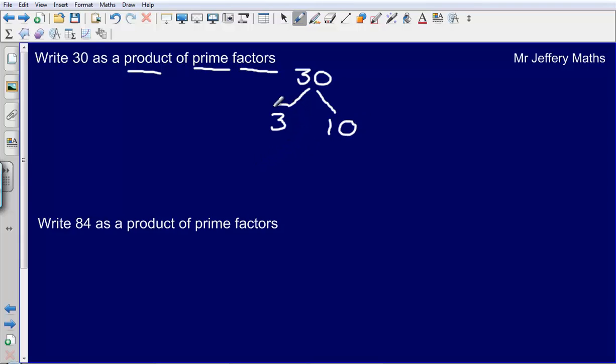Now if I get a prime number, all I'm going to do is just circle it. So there, 3 times 10, 3 is a prime number so I've circled it. Now how can I make 10? Well I can make 10 by doing 2 multiplied by 5. Again, I've reached 2 prime numbers here, 2 is a prime number, 5 is a prime number.